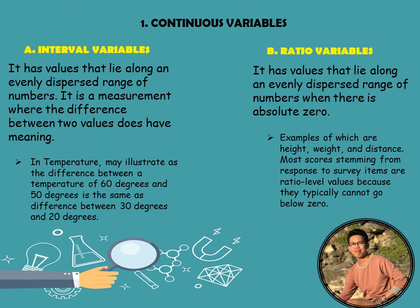In ratio variables, there is an absolute zero, meaning there is an absence of zero in a practical sense. For weight, you cannot say someone has zero weight — unlike a piece of paper or cotton, a person always has weight. For height, you cannot say zero height because that would mean the person does not exist. For distance, you cannot say zero distance if you are simply standing somewhere — you still occupy a position.